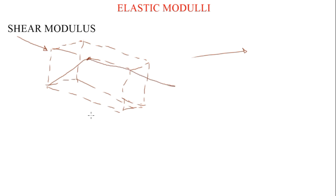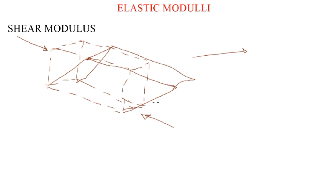We can have the same block in a different dimension after the force is applied, with an opposite force acting on it as well. There will be a change in length in this displaced area — let's call it delta x. Let's call the original height of the material h. Since the material has been displaced through a particular angle, let's call that angle theta.